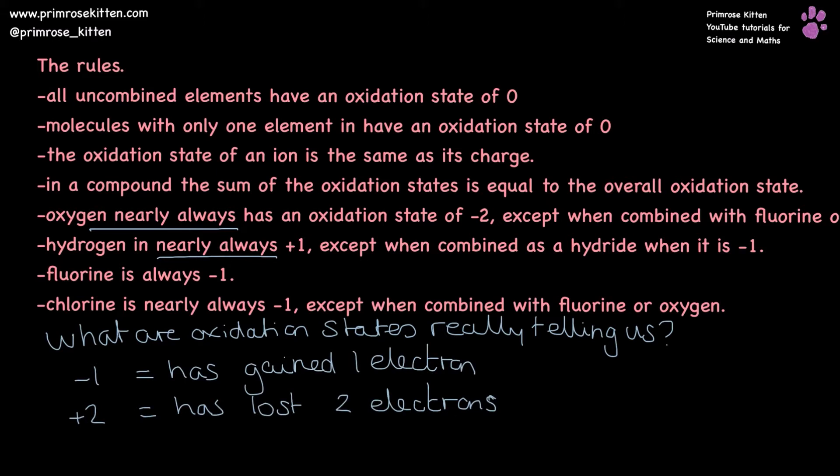If something has an oxidation state of minus one, it has gained an electron. If something has an oxidation state of plus two, then it has lost two electrons.